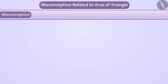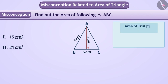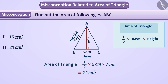Misconception: Find out the area of triangle ABC. The formula of area of triangle is equal to half multiplied by base multiplied by height. Some children consider side BC as base and side AB as height, which results in an area of triangle as 21 square centimeter.